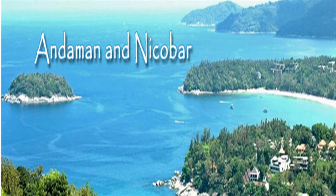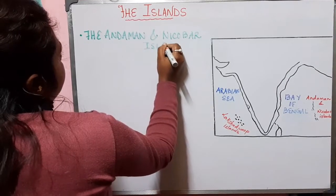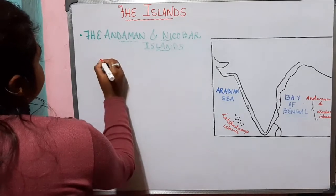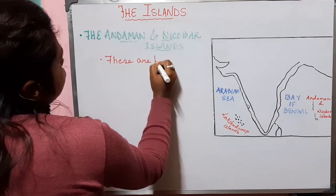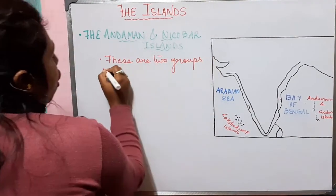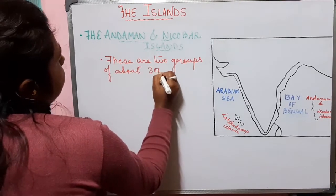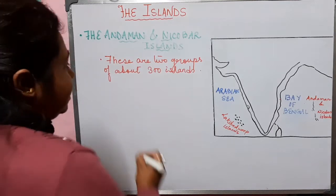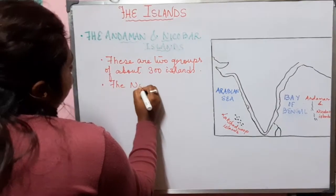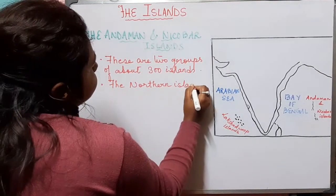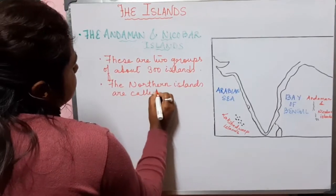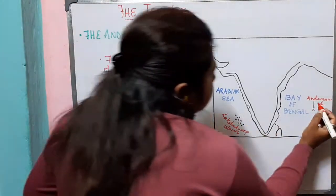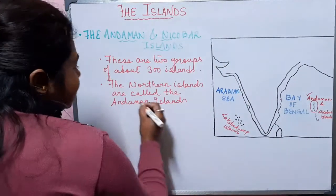Now let us know about the Andaman and Nicobar Islands. The Andaman and Nicobar Islands are two groups of about 300 islands. The northern islands are called the Andaman Islands.